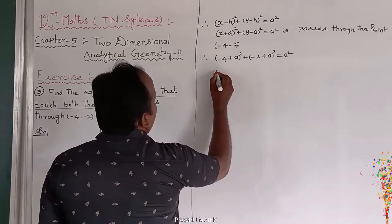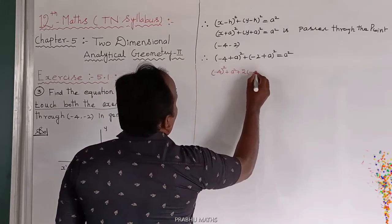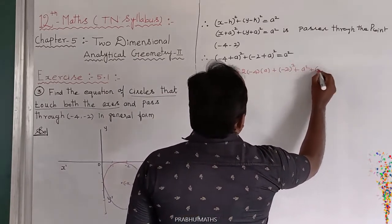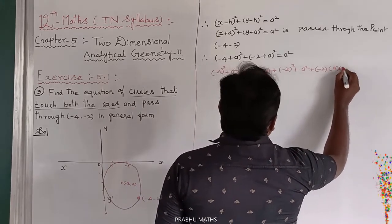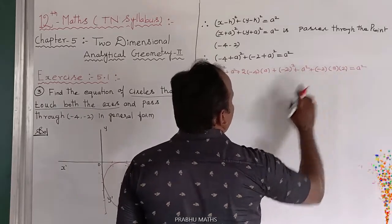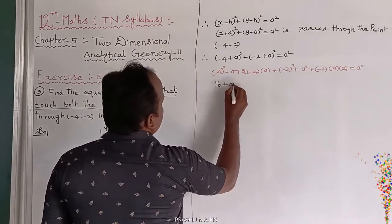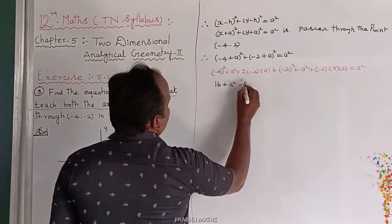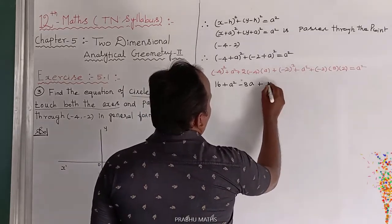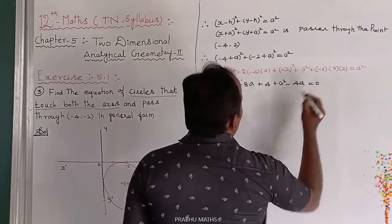Expanding using the a minus b whole square formula: 16 plus a squared minus 8a, plus 4 plus a squared minus 4a, equals a squared.